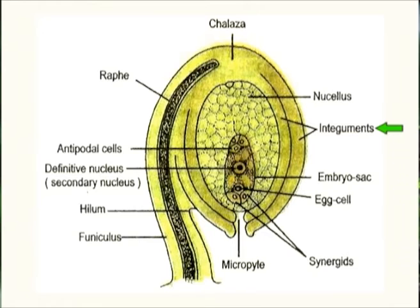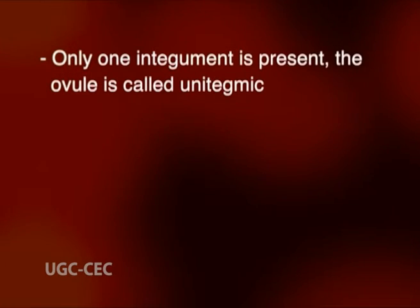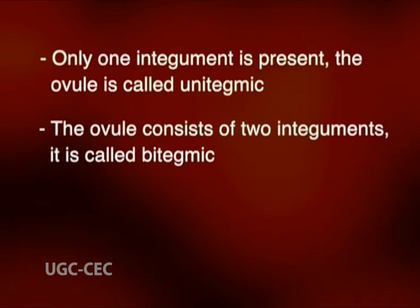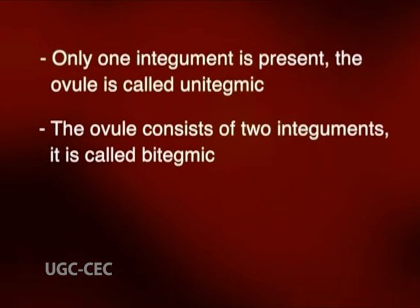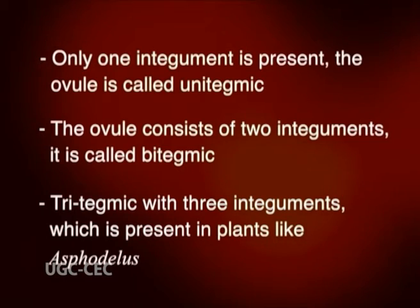On the basis of the number of integuments, the ovule is categorized as unitegmic when only one integument is present. If the ovule consists of two integuments, it is called bitegmic. Very rarely, tritegmic ovules with three integuments are present in plants like Asphodelus. In some plants such as Santalum, ategmic conditions with no integuments may be present.